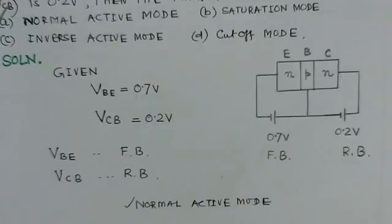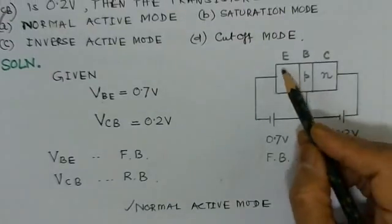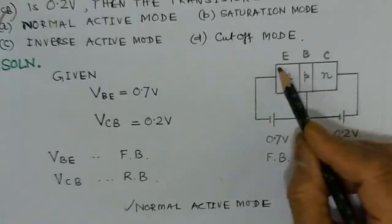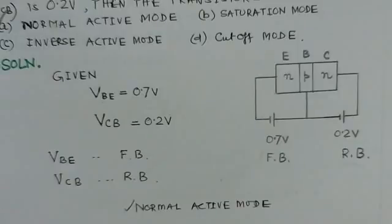So the best way to do such problems is to make transistor in the form of NPN junction and then apply the corresponding bias and try to see how the junctions are biased. Thank you.